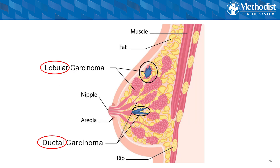We then have the ducts that drain the lobules and bring the milk down towards the nipple. The reason that's important, and why I like to start there, is we use those terms lobular and ductal to describe where things are found within the breast.